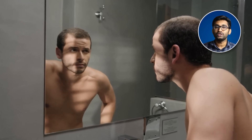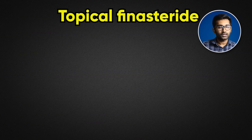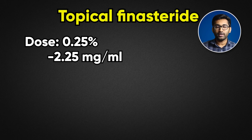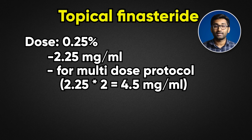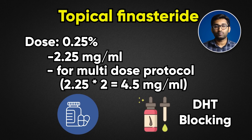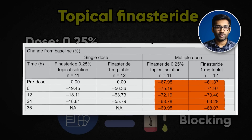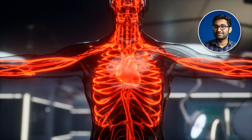The oral and topical effect on DHT suppression is compared. Because hair loss is a slow process, it is important to suppress DHT as much as possible consistently. The topical finasteride at 0.25% concentration provides meaningful scalp DHT suppression. When comparing drug exposure, the systemic exposure with topical is substantially lower — roughly 2.25 mg/mL versus 4.5 mg/mL for oral, meaning much less systemic drug exposure while still blocking scalp DHT.